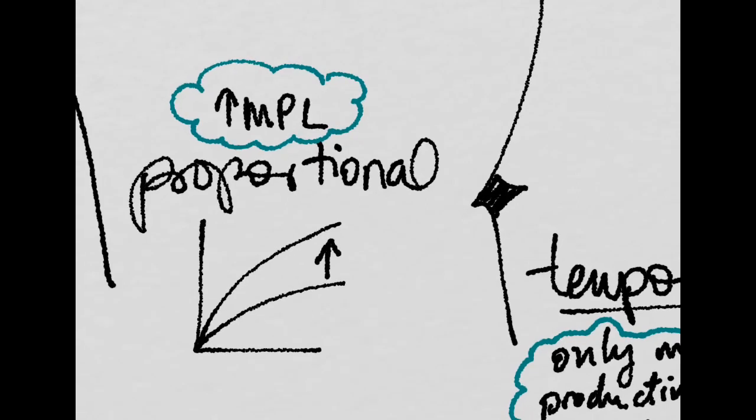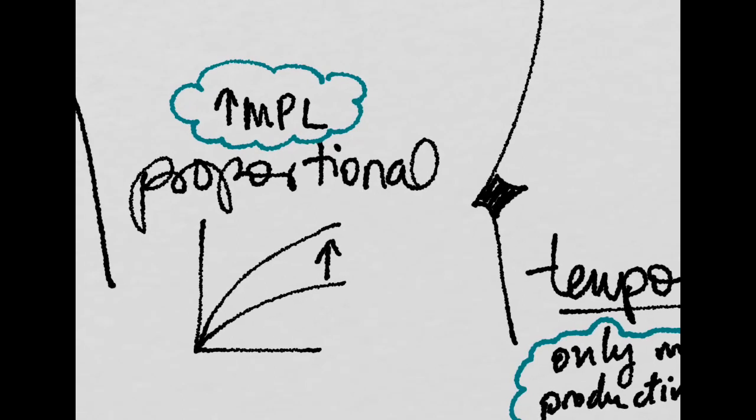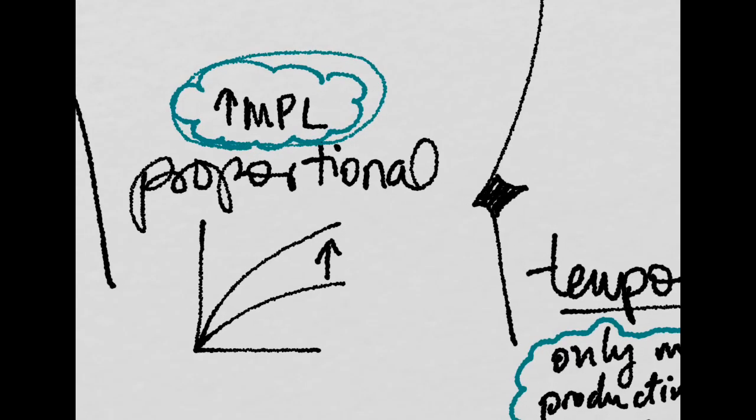Now, imagine you have a proportional shock in the production function, that is, you have an increase in the productivity of labor at every level of labor.